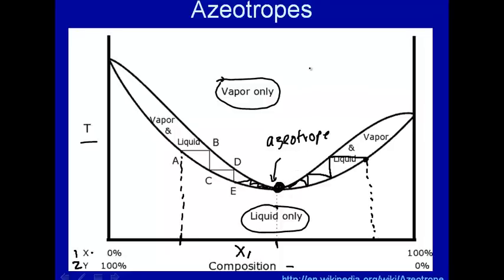An example of an azeotrope, by the way, is ethanol and water. At 95% ethanol and 5% water, this forms an azeotrope. So if you start with an ethanol water mixture and try to separate out pure ethanol from that, you can only get up to 95% ethanol because at 95% ethanol, 5% water, you form an azeotrope and you can't purify it anymore. You're like right there.